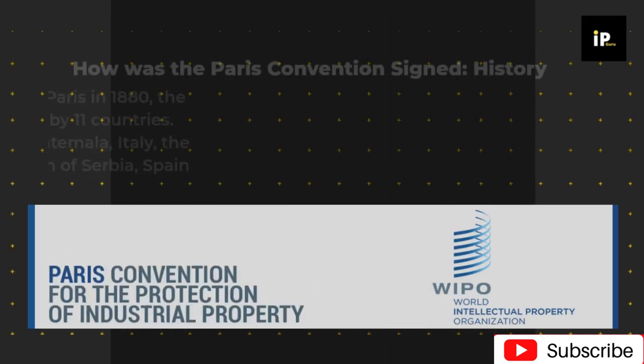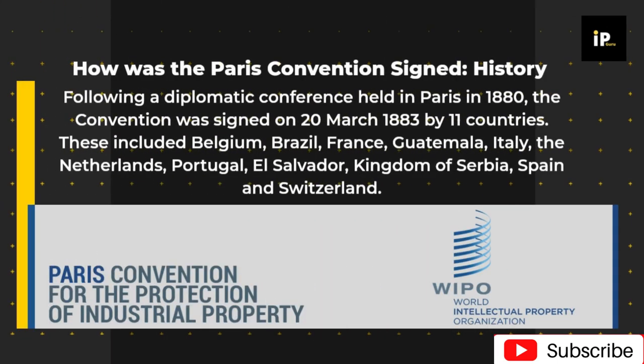Following a diplomatic conference held in Paris in 1880, the convention was signed on March 20, 1883, by 11 countries. These included Belgium, Brazil, France, Guatemala, Italy, the Netherlands, Portugal, El Salvador, Kingdom of Serbia, Spain, and Switzerland.